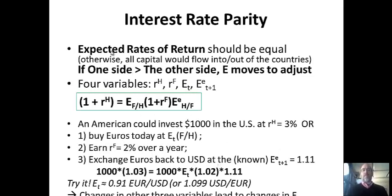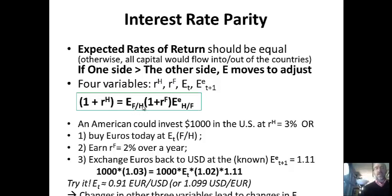The expected rates of return should be equal. If one side is greater than the other, the exchange rate E is going to move to adjust. Remember, exchange rates can be represented two ways: if $1 is worth 20 pesos, that's 20; but 1 peso is worth $0.05. An American could invest $1,000 in the U.S. at 3% interest, earning $1,030. Or they could invest in Europe at 2%—a three-step process: exchange to Euros, earn interest, exchange back. These two outcomes must be equal, and economic forces ensure it.